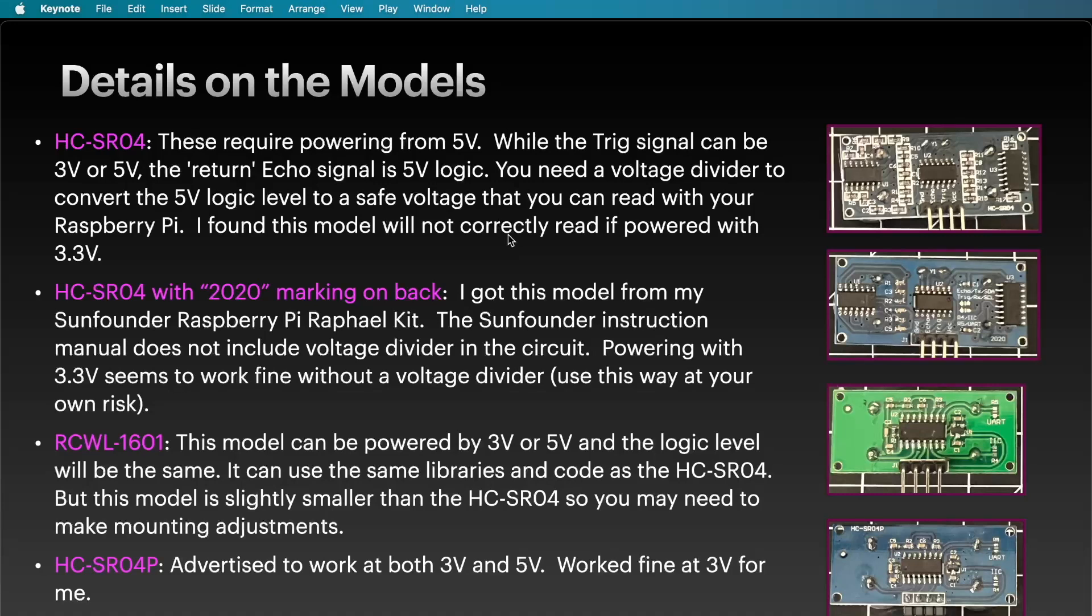I did try to power it with 3.3 volts off of my Raspberry Pi and I couldn't get good readings coming back so definitely need to run this one at 5 volts. The next one looks really similar although the back is a little bit different and you'll see on the back that there's a 2020 marking on the back of it. This is the one that I got out of my SunFounder kit for the Raspberry Pi and I looked in their instructions and they didn't use a voltage divider with this circuit. It does appear that powering it with 3.3 volts off your Raspberry Pi is fine but I just want to point out I couldn't really get a clear answer so just be careful using this without one. But it does appear to work and it gets good readings at 3.3 volts.